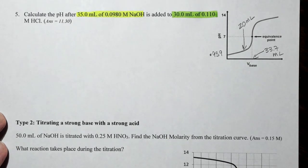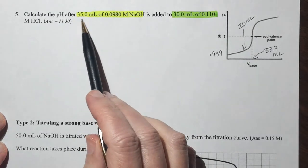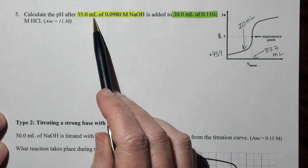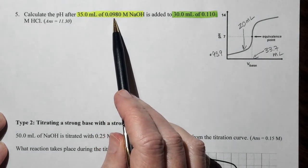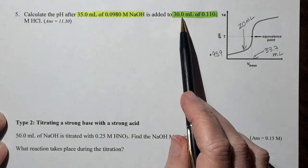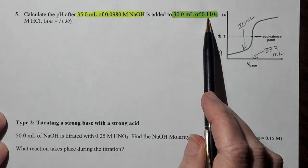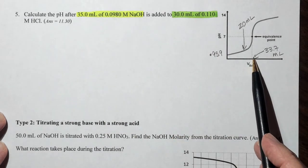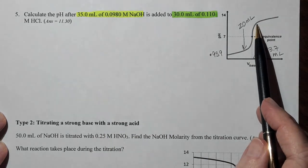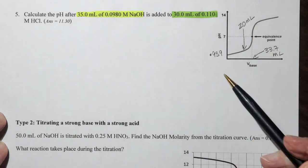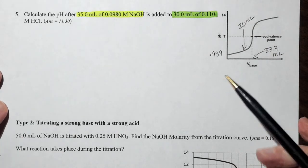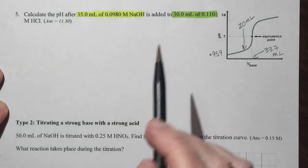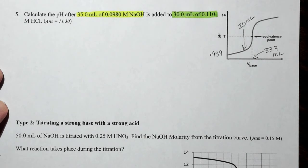Okay, so the last part of this calculation is to calculate the pH after we've added 35 mLs of 0.0980 molar sodium hydroxide to the 30 mLs of 0.110 molar. So our equivalence point was at 33.7. So we're going a little bit past that. And we're going to calculate the pH. This is going to be another limiting reagent problem. So I want you to set up the rice table.